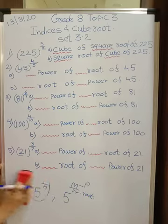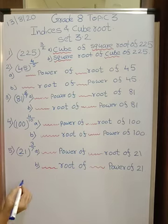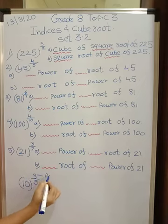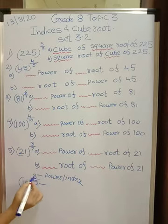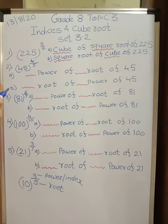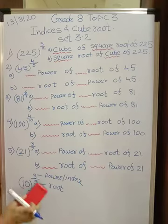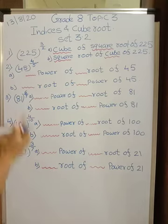Let us take an example with numbers. If I write, for example, 10 raised to 3 upon 5, then 3 is power or index and 5 is in denominator, so it will be root. Just keep in mind: numerator is power and denominator is root if this fraction is acting as an index.